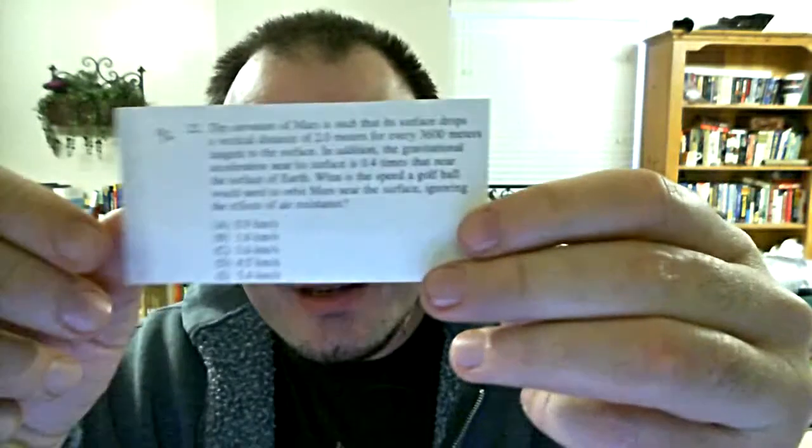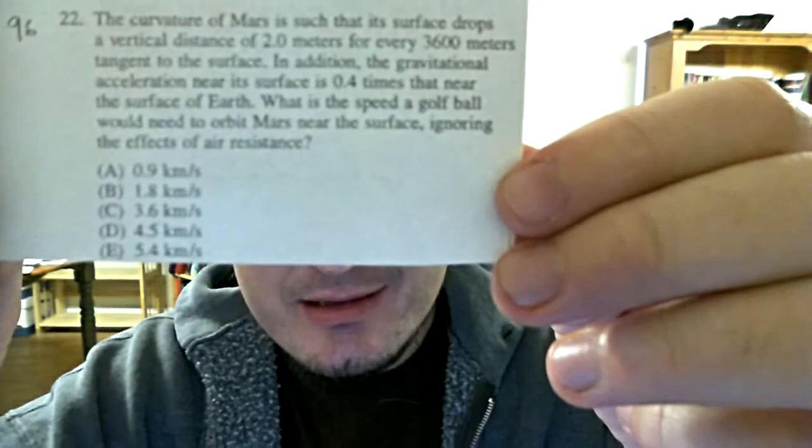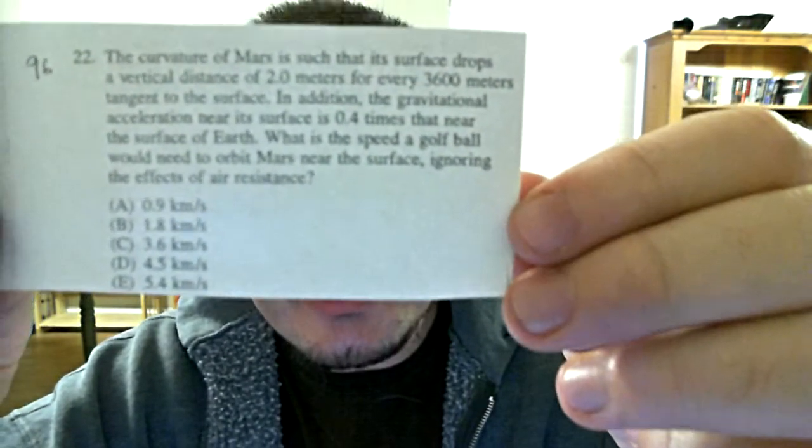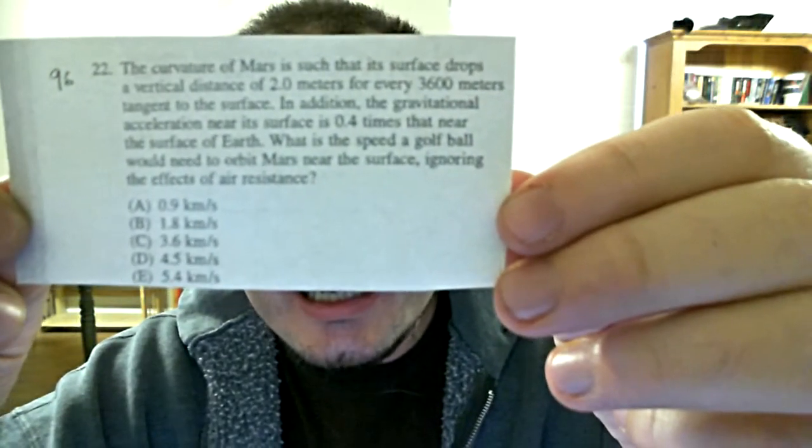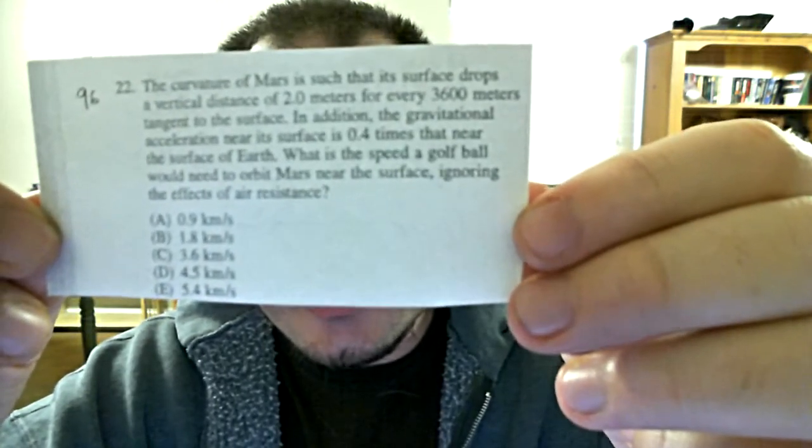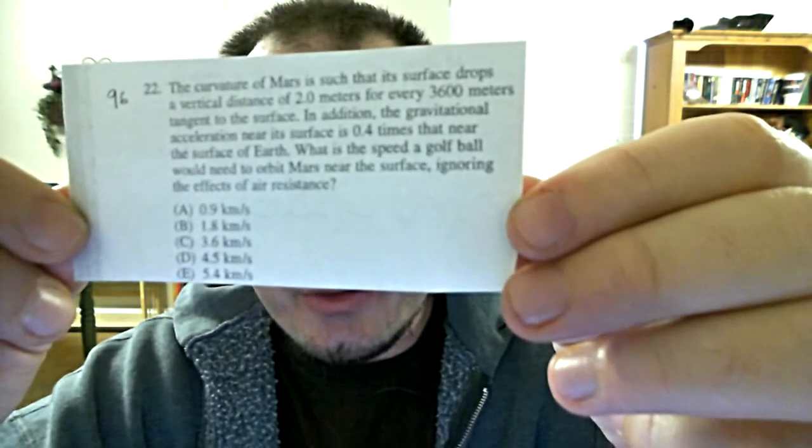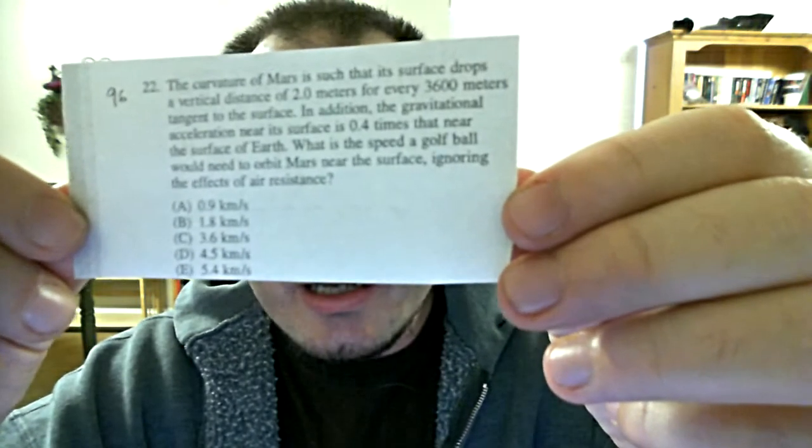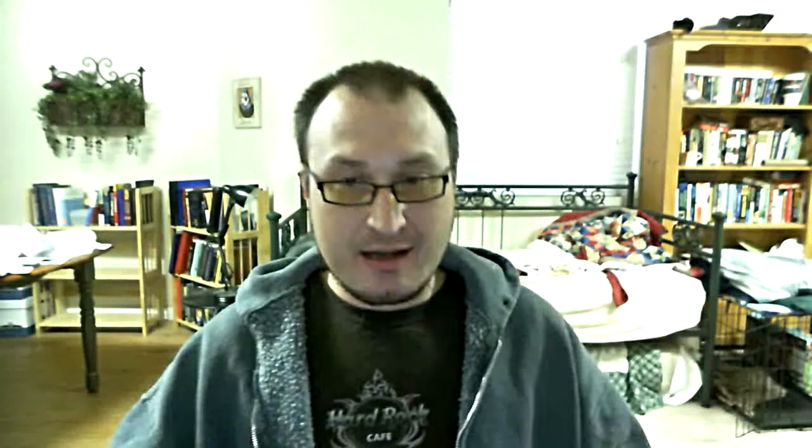Let's go ahead and start. Number 22, 1996 exam. I would usually scan through the answers, they are just speeds in kilometers per second, pretty big speeds, they don't help me. The problem: the curvature of Mars is such that its surface drops a vertical distance of two meters for every 3,600 meters tangent to the surface. In addition the gravitational acceleration near the surface is 0.4 times that near the surface of Earth. What is the speed a golf ball would need to orbit Mars near the surface ignoring the effects of air resistance?